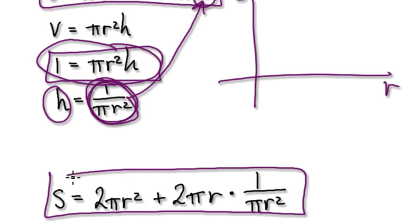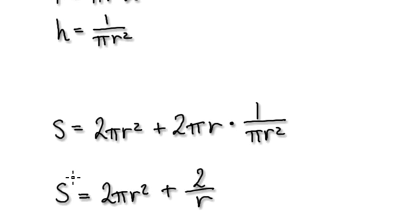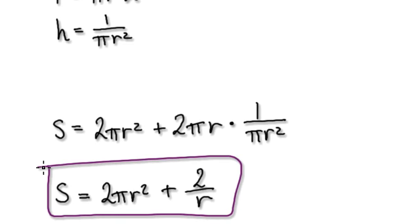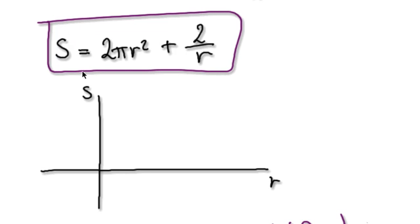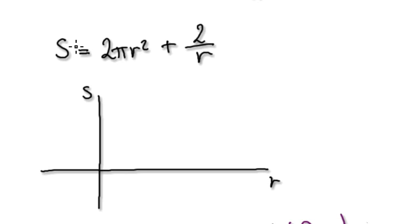The surface area is given by this. Tidy it up, and it will give you S = 2πr² + 2/r. So now we can sketch a graph of S versus R.